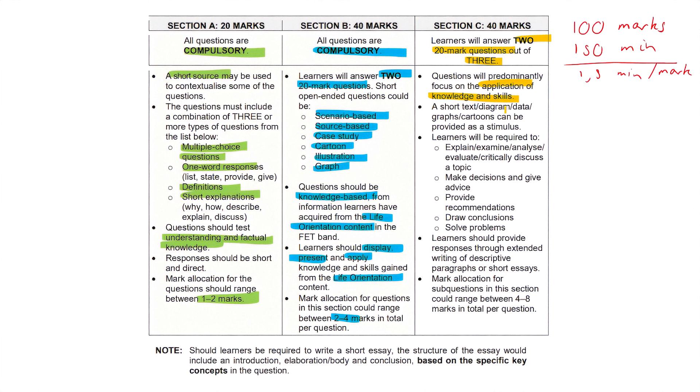Next, a short text, diagram, data, graphs, cartoons, anything could be given to provide a stimulus so you know where you're at. Explain, examine, analyze. These are some punchy verbs that they could use. Evaluate means describe the advantages, the disadvantages. Critically discuss. Examine. Make decisions sometimes. Give advice. Give your own opinion. And remember, your own opinion can't be wrong unless you're just way off or you're inciting violence or whatever. Provide recommendations, perhaps a remedy on how you could deal with that. Deal with the issue in the case study. Draw conclusions.